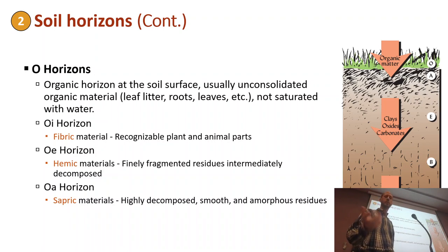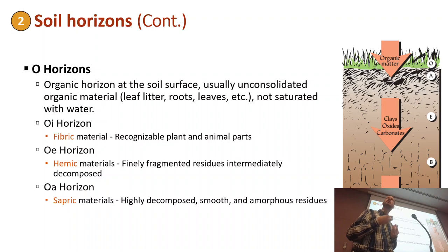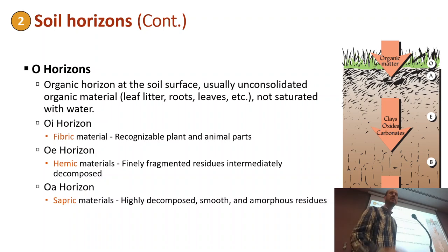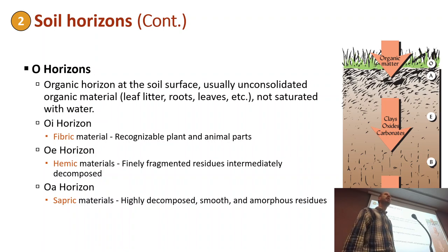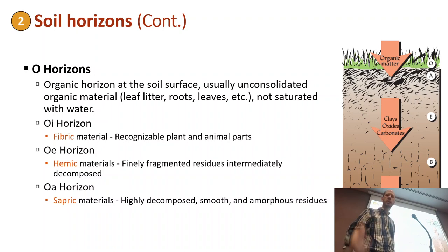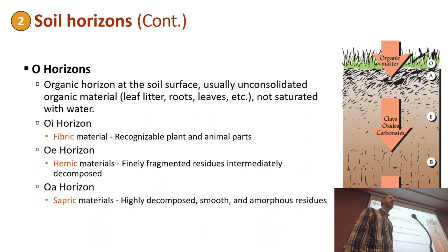OA, or sapric horizon, is highly decomposed — very, very organic. It's not a mineral layer with some organic matter, but an organic layer with some mineral fraction. Normally, O horizons are described in forest environments; you won't usually find them in Oman. Maybe in Salalah and other more humid parts of Oman you will see O horizons.